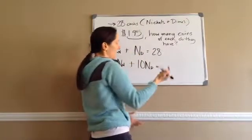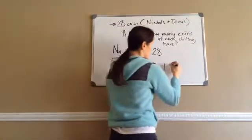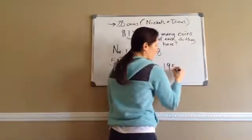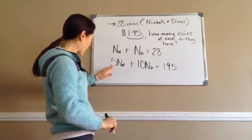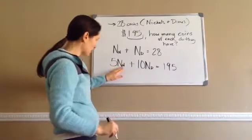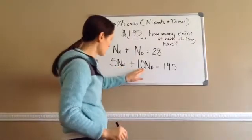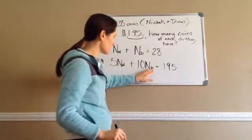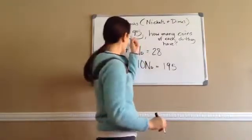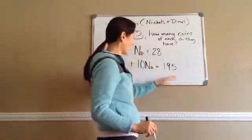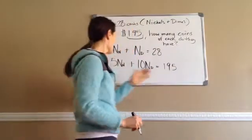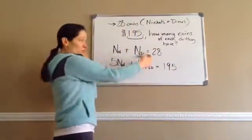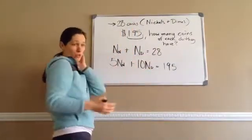$1.95 is 195 pennies. So: five pennies equals a nickel, ten pennies equals a dime, and $1.95 equals 195. These are the two equations we're going to use.